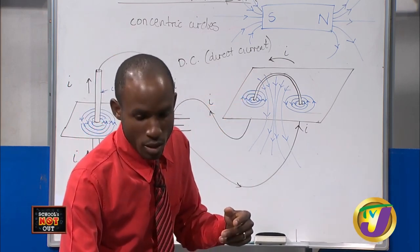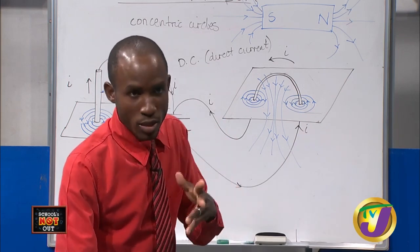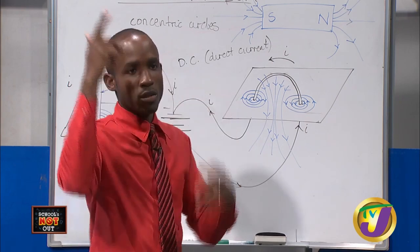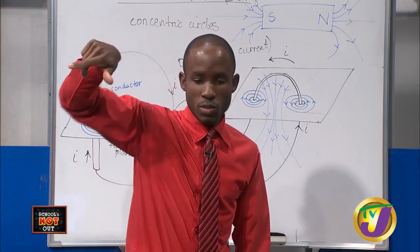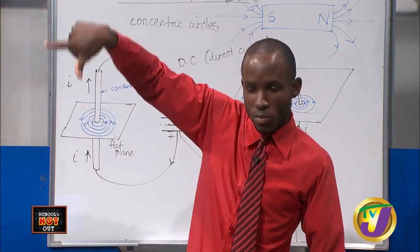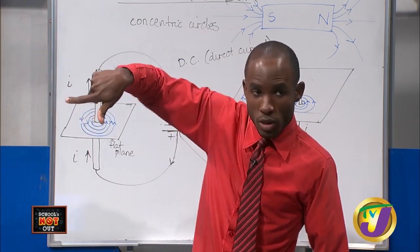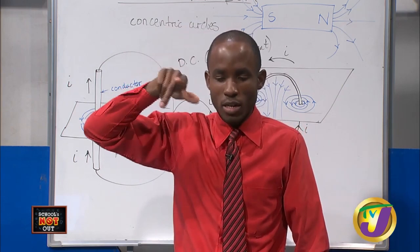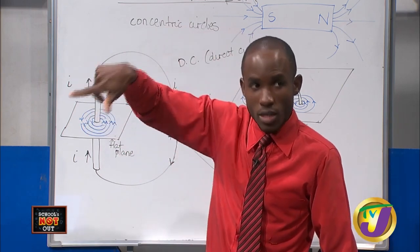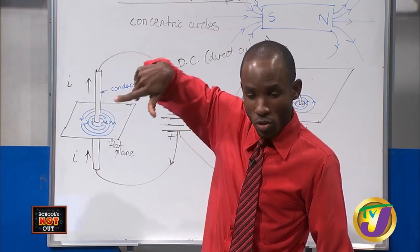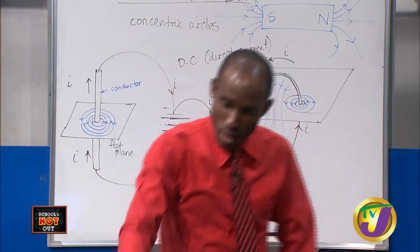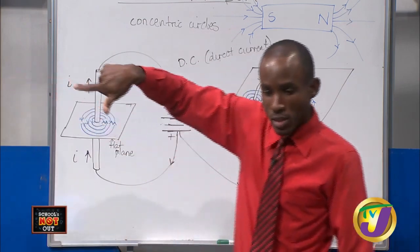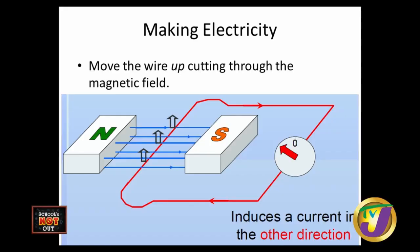Looking back at the diagram: the field points to the left, the motion is downward, so the induced current is going that way. On the opposite slide, the field is the same, but now the wire is moving up instead of down, and we have a situation where the current will change direction. That is how electromagnetism works — once you have a current-carrying conductor moving in a magnetic field, you will have an induced current.